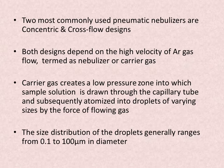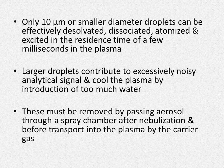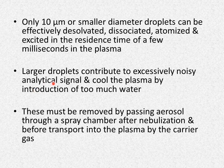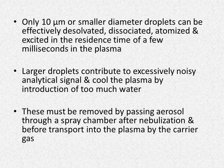The droplets produced are of different sizes, and the size distribution generally ranges from 0.1 to 100 micrometers in diameter. However, only droplets of 10 micrometers or smaller diameter can be effectively desolvated, dissociated, atomized, and excited within the residence time of a few milliseconds in the plasma. Larger droplets contribute to an excessively noisy analytical signal and cool the plasma by introducing too much water, so they are problematic and must be removed.